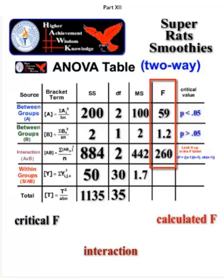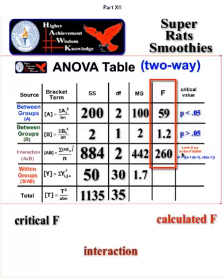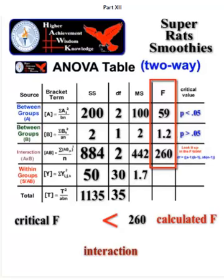Now we're going to check the interaction. F 260, that's just crazy, that's huge. And we already know the critical F is already 3.32 because it has the same amount of degrees of freedom, right, 2 comma 30.